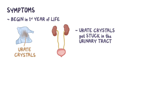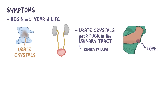In older children and adults, the urate crystals deposit all over the body — in the kidneys, slowly leading to kidney failure — and under the skin of the elbows, earlobes, fingers, and knees, appearing as chalky lumps or nodules called tophi. They can also collect within joints, particularly within the first metatarsal joint of the foot, or the base of the big toe, causing a form of inflammatory arthritis called gout.